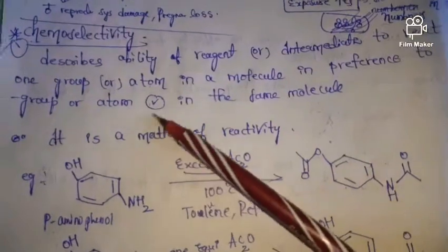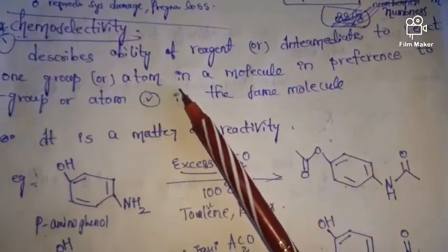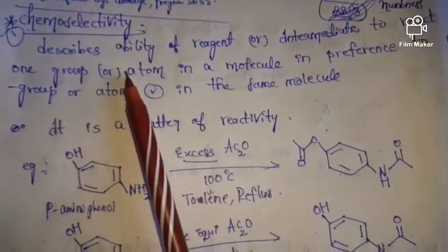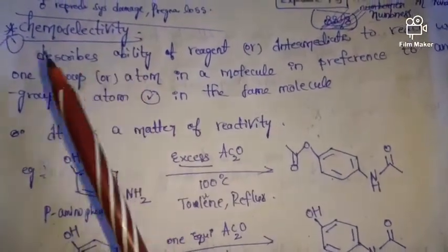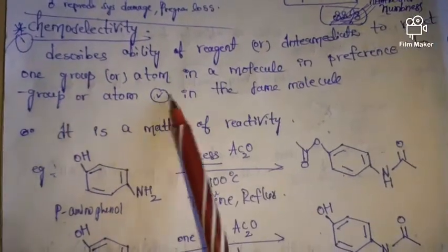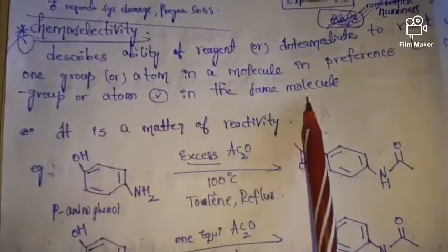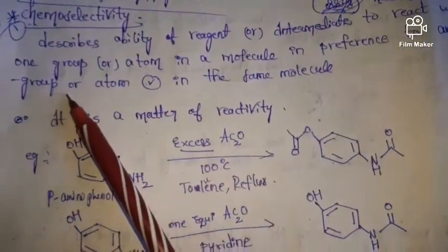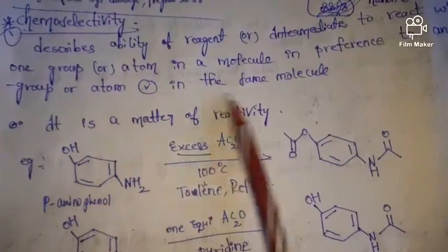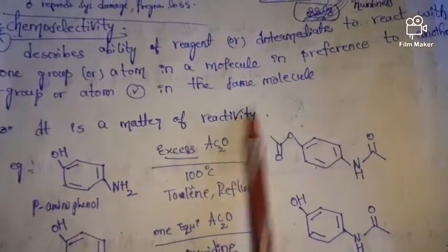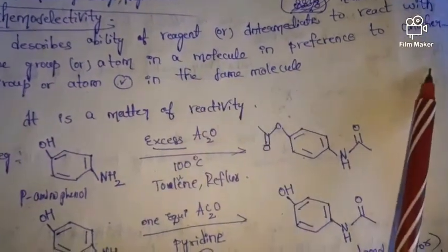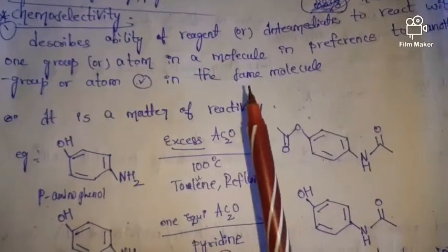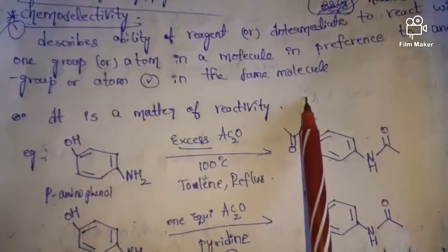First, chemoselectivity. Chemoselectivity means it is the ability of a reagent or intermediate to react with one group or atom in a molecule in preference to another group or atom present in the same molecule.